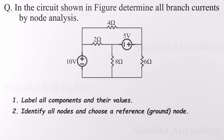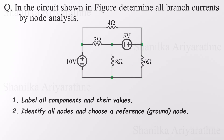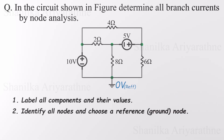A node is any point where two or more elements — like resistors or sources — are connected. If two points are connected directly without anything like a resistor or voltage source in between, they count as the same node. There are four nodes in this circuit. We pick the one connected to the most components — here, one connected to a voltage source and two resistors. No matter which node you choose as reference, the final branch currents come out exactly the same.